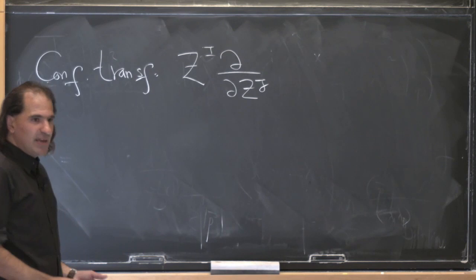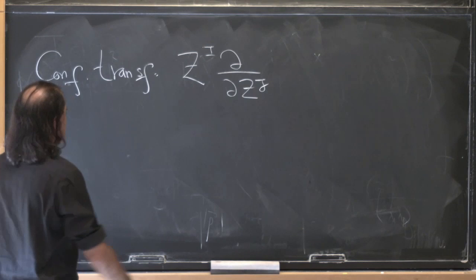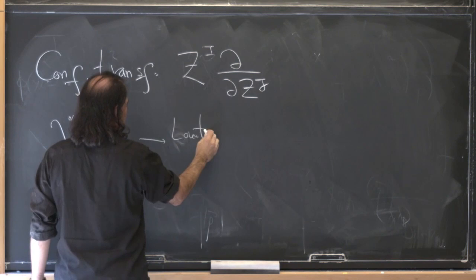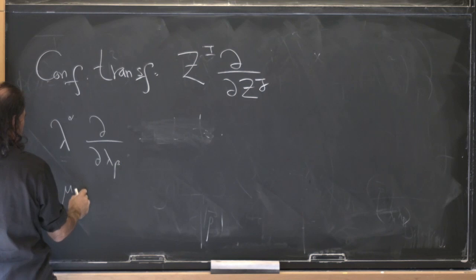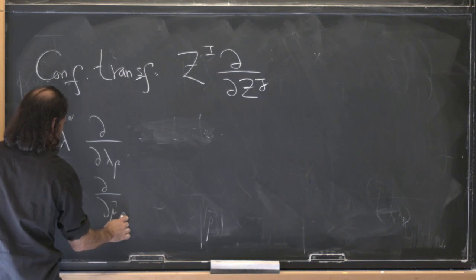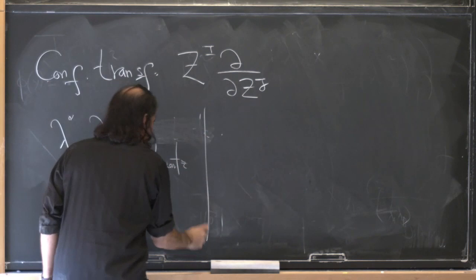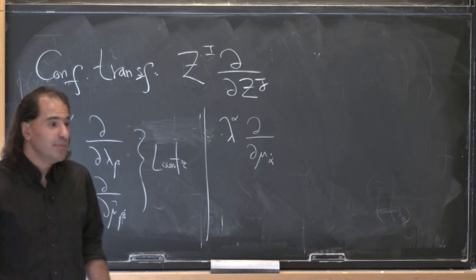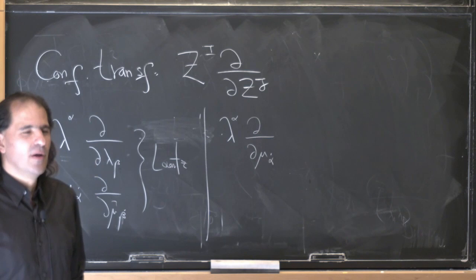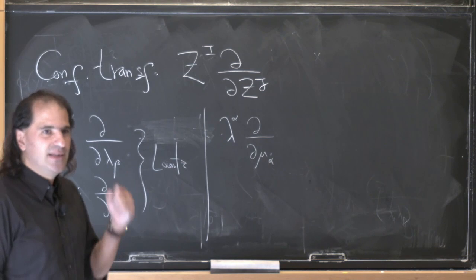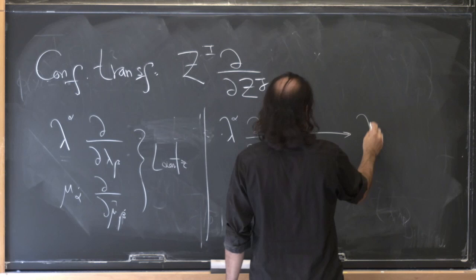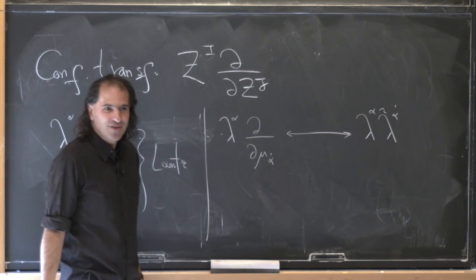Let's decompose this into lambdas and mus. There's a piece lambda · d/dlambda — that's Lorentz. There's another piece mu · d/dmu — also Lorentz. There is something which is lambda · d/dmu. Back in terms of the original variables — mu is the conjugate of lambda-tilde, so when I hit d/dmu it's like pulling down lambda-tilde — so lambda · d/dmu is just lambda · lambda-tilde, which is just a translation — the momenta. These are the translation operators.